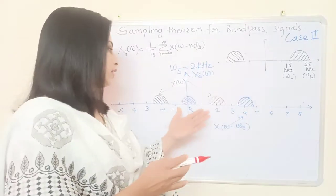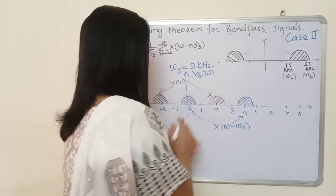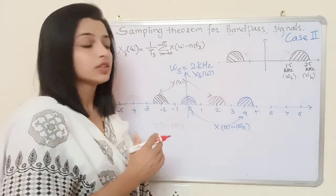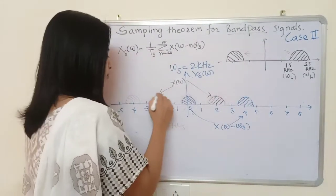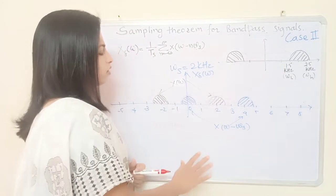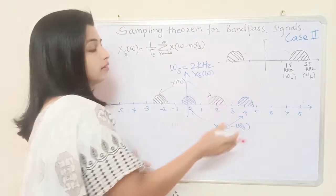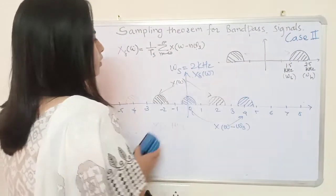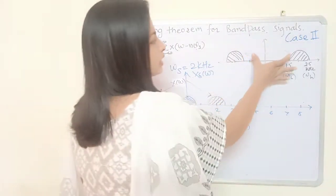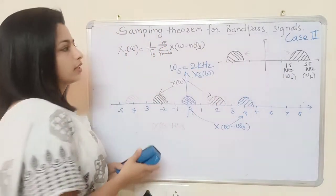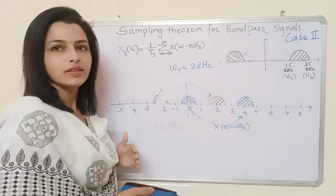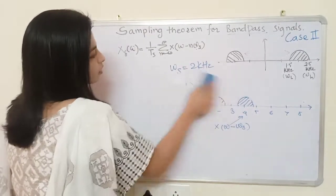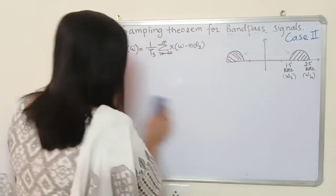So this complete analysis shows that aliasing is occurring here — we do not want this mixing of the original spectrum and the images. Everywhere you observe that this mixing is happening, so we cannot sample this signal with double the bandwidth. Because of that, we need to do something else. Somehow we have to utilize the gap so that we can go for a sampling frequency which is less than 5 kHz, which will be beneficial for us. So there is a formula, and we have to calculate a number k.